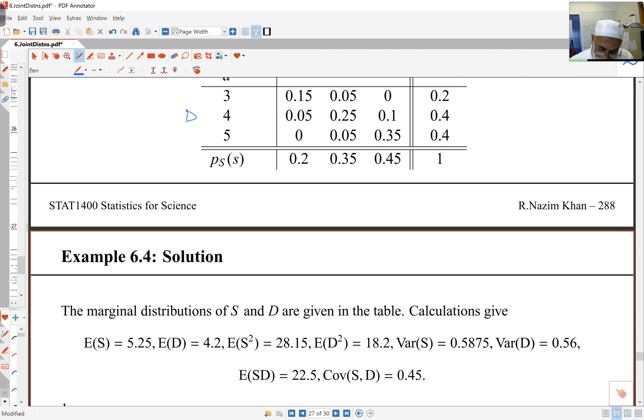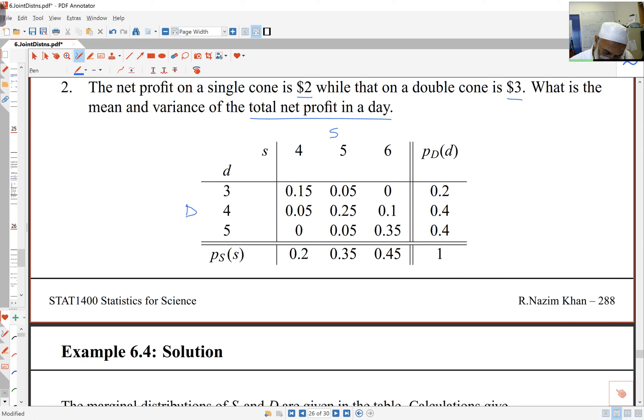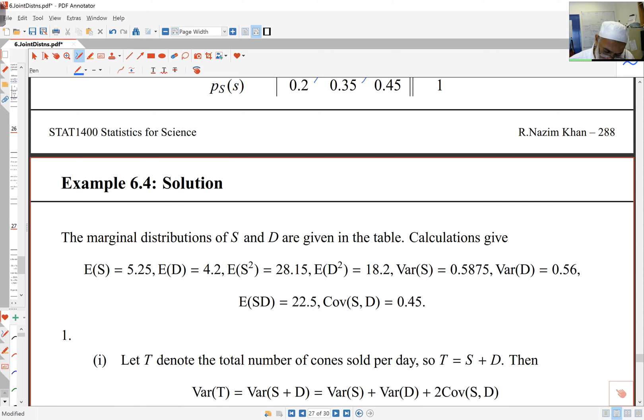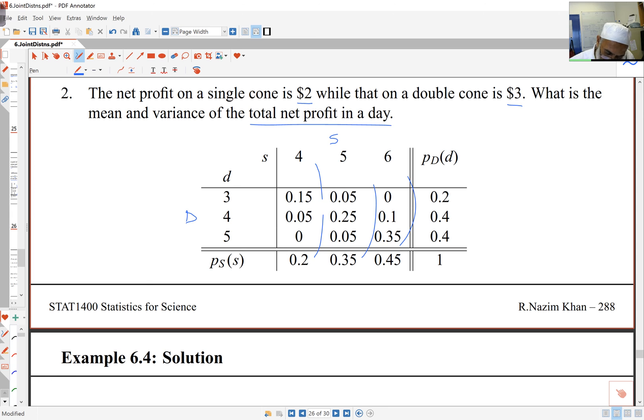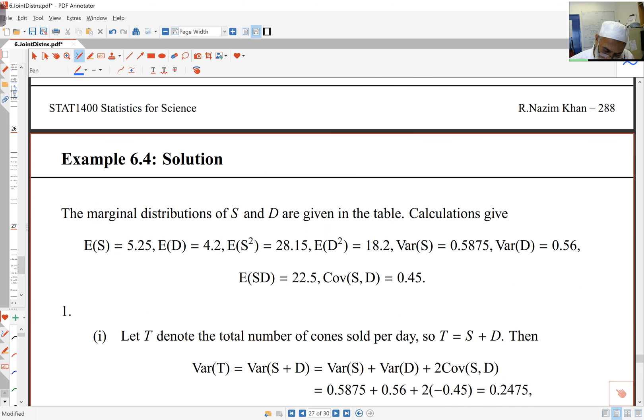E of S is 5.25. We can see that because we do the calculations. E of D is 4.2. E of S squared is worked out in the same way, same for E of D squared. You can then work out the variance of S and the variance of D. E of SD is worked out as we did before. So it's S times D and the rest of it. There are some zeros here. E of SD will be S times D times probability. If you do that to all the cells and add them up, you'll get 22.5. That gives us covariance as 0.45. You can check those calculations.